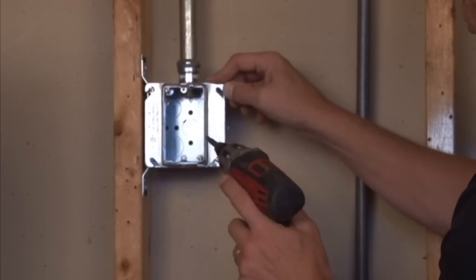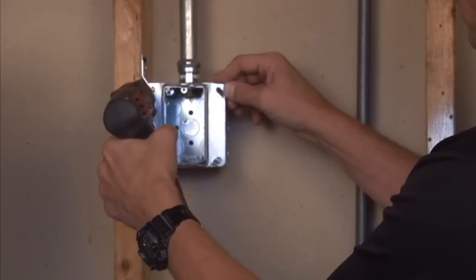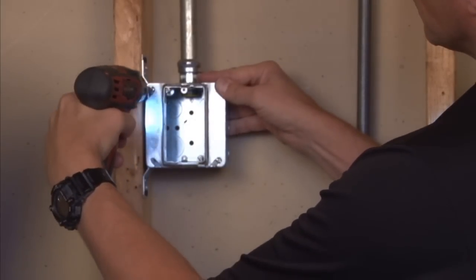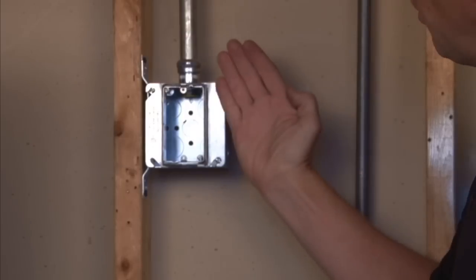Tighten the box screws in each corner to get a nice secure fit. Once the ring is on, the drywallers, sheet rockers and tilers can come.